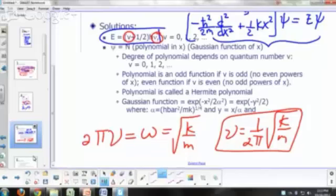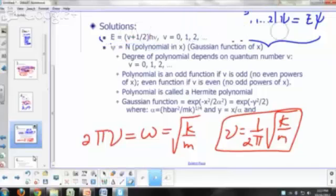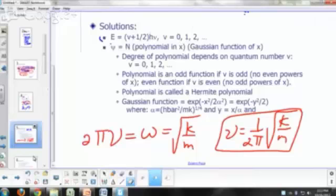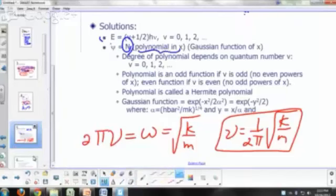So that's the allowed energy. And the wave function, psi, if you examine the solutions to this, you'll find that the wave functions generally have these characteristics right here. You have a normalization constant N, and you have a polynomial in X,